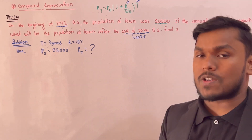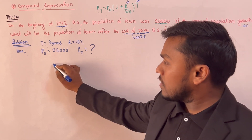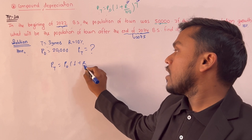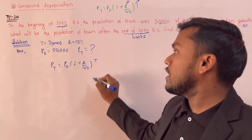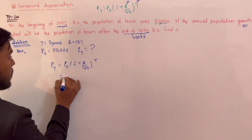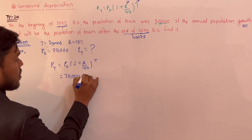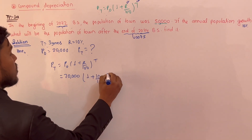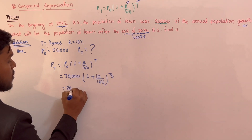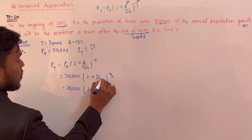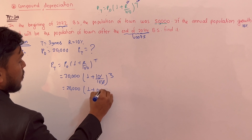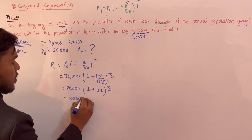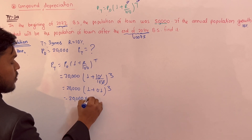Here P0 is the local population. We know the formula: Pt equals P0 times (1 plus r upon 100) to the power t. With 20,000 as initial population, 10% rate over 3 years.